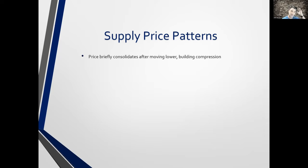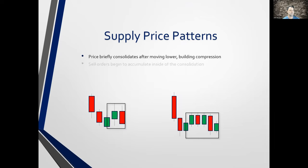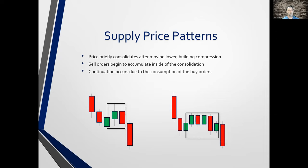Previously we were looking at demand price patterns. Now we're going to look at supply — this being the second pattern. Price briefly consolidates after moving lower. The difference in the two patterns is one's moving up, one's moving down — they're literally inverse. They're going to build compression. In a supply pattern, when price moves down and then pauses and begins to move sideways, that is the accumulation of order flow. What tells us it was predominantly sell orders is the continuation.